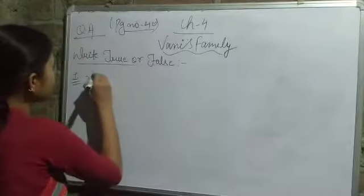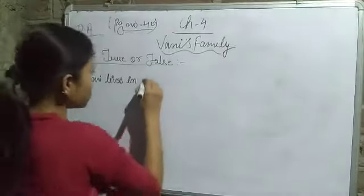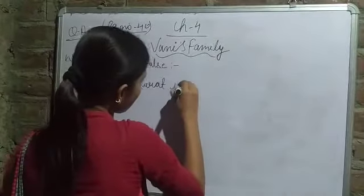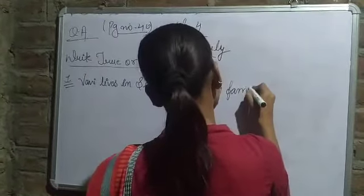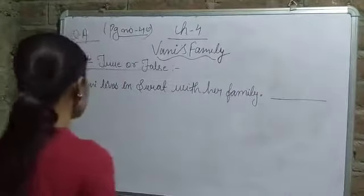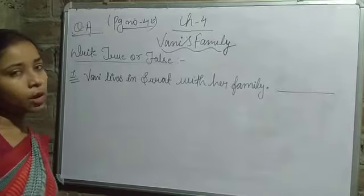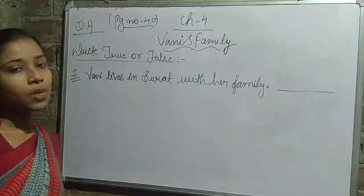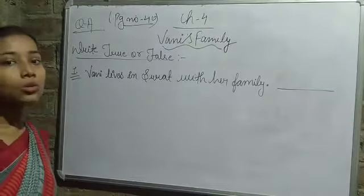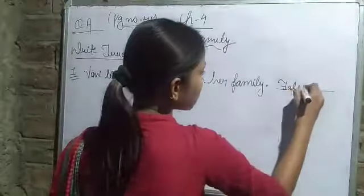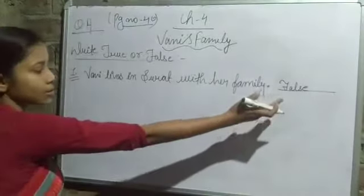Number 1: 'Vani lives in Surat with her family.' As we already know from the story, Vani is from Agra. So 'Vani lives in Surat with her family' is a totally wrong sentence. We have to write False in front of this sentence. False means Galat.